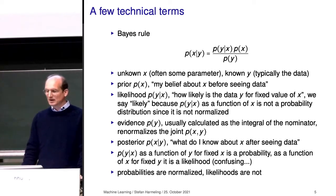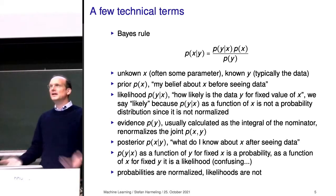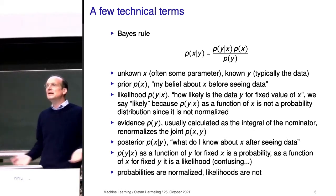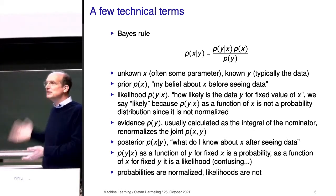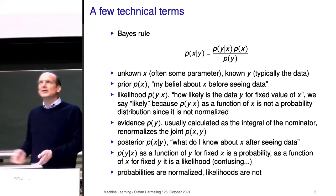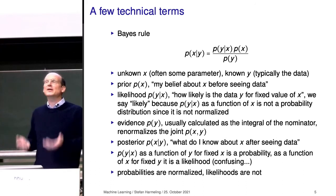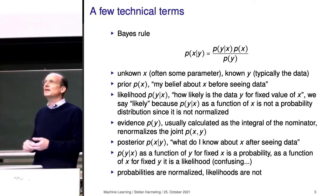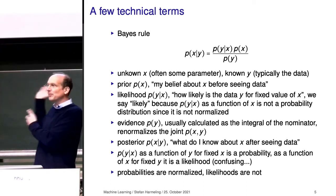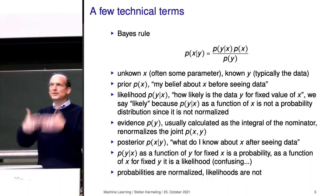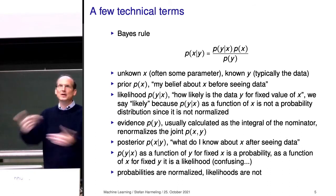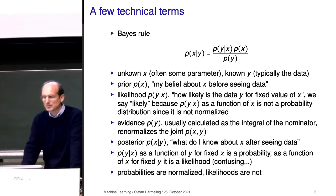There are a few technical terms we've seen. Bayes' rule is actually a theorem, and you don't need to memorize it — you only need to memorize the product rule and the sum rule. From those you have Bayes' rule, by applying the product rule twice to the joint distribution.